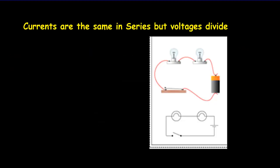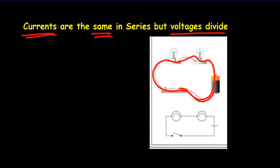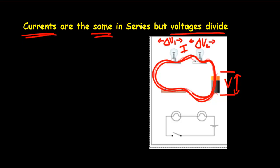A few ideas we've got to keep in mind: the first is that currents are the same in series, while voltages divide. We've talked about this already - we'd have to have the same current through both light bulbs; current isn't used up and we get a common current going through that circuit. Those two bulbs are in series, but the voltage would divide. If the battery voltage is 10 volts, then the two voltages across the bulbs might be 7 volts and 3 volts so that they add up to 10. That's really all about conservation of energy - we only have a certain amount of energy per charge available and it gets used up in one light bulb and then the other.